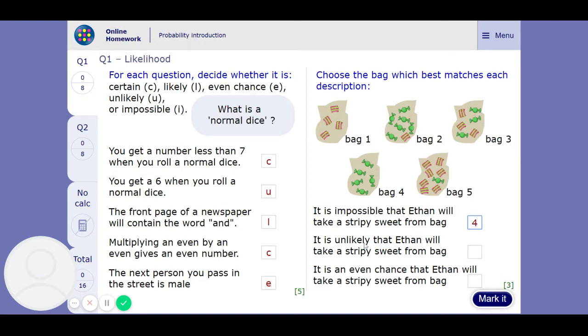It's unlikely he'll take a Stripey Sweets, so it's going to be bag 2, because there's only one and there's loads of others. Even chance, that was bag 3, they've got the same number of each in there. So, let's just check that. Yes, great. On to the next page.